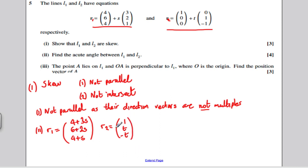Next thing we need to show is that they do not intersect. I like to write these in a different format as one column vector. So I am going to write R1 as follows: 4 plus 3S, 6 plus 2S, and 4 plus S.